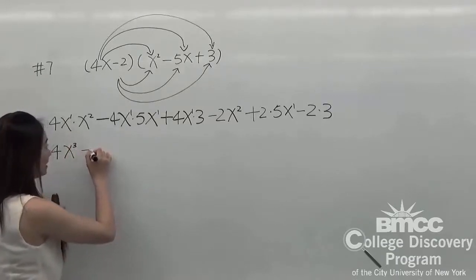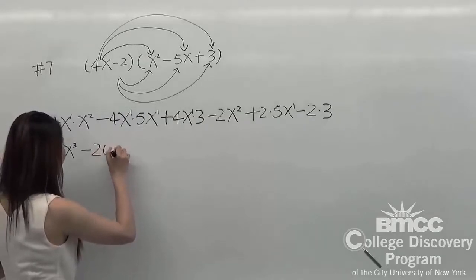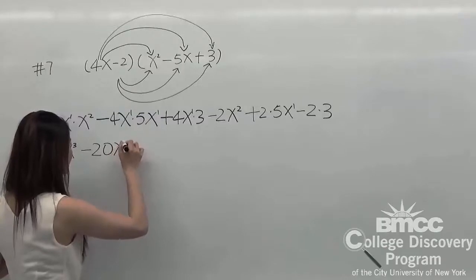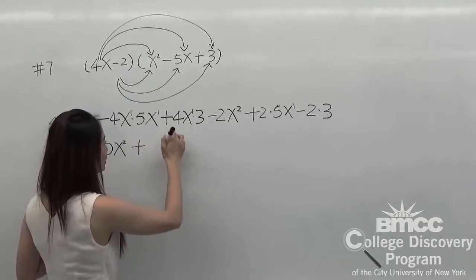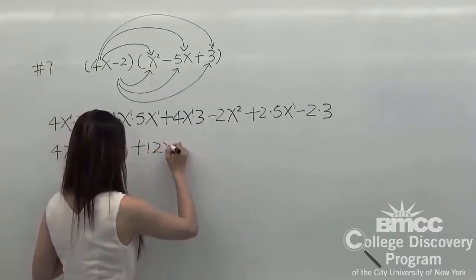Keep the same sign. 4 times 5, it will be 20, and 1 plus 1 makes x squared. Keep the sign. 4 times 3, it will be 12x.